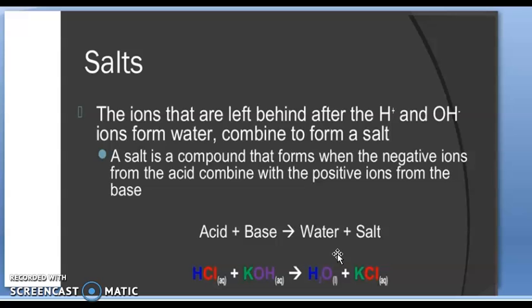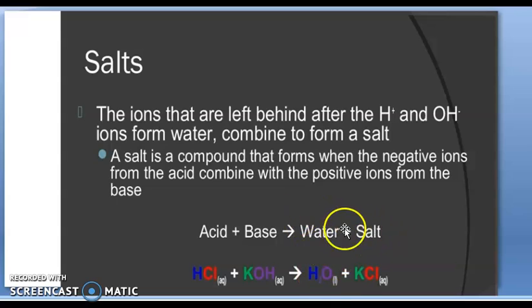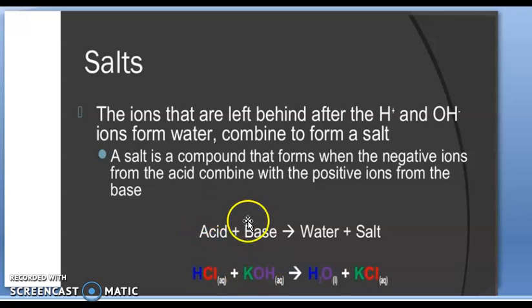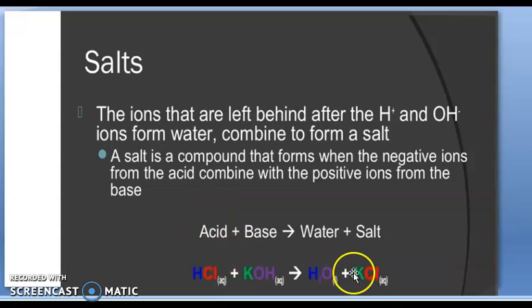Now, salts. When acid reacts with base, water and salt are formed. The ions left behind after H⁺ and OH⁻ form water combine to form a salt. A salt is a compound that forms when negative ions (anions) from the acid combine with the positive ions (cations) of the base.